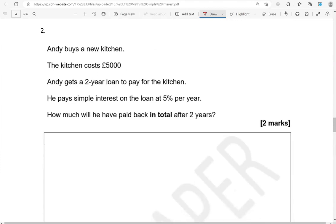Andy buys a new kitchen. The kitchen costs 5,000 pounds. Andy gets a two-year loan to pay for the kitchen. He pays simple interest on the loan at 5% per year. How much will he have paid back in total after two years? So again, 5% per year over two years, that will be 10%.